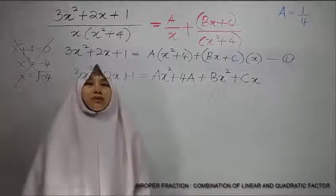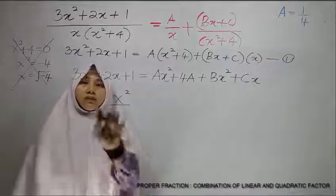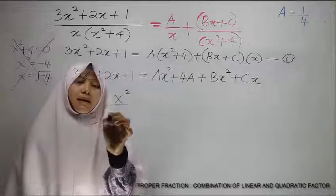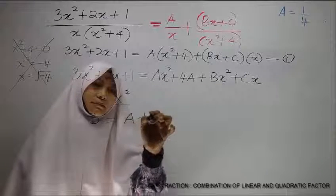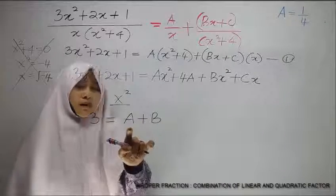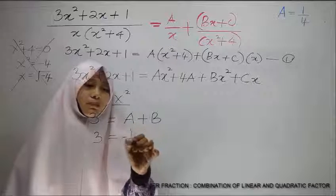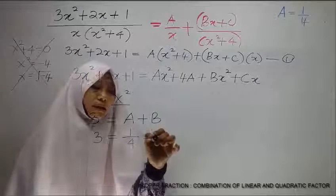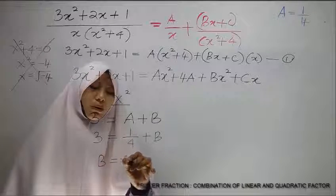Let's say we want to compare x squared. Take 3 equals to A plus B. Now, we know the value of A, so 3 equals to 1 over 4 plus B. So B would be 11 over 4.